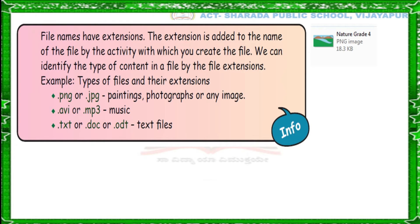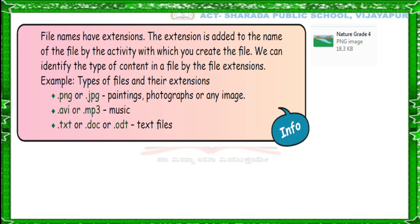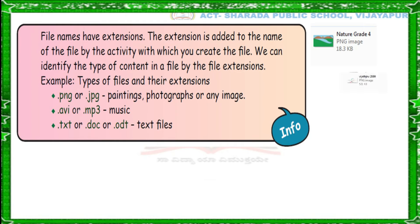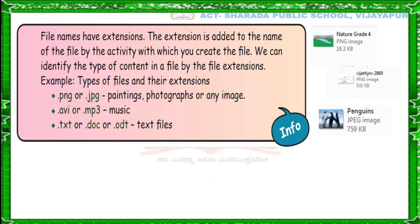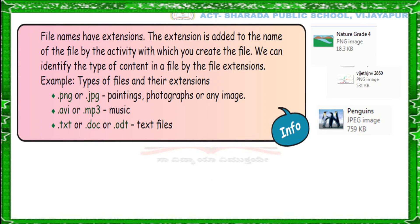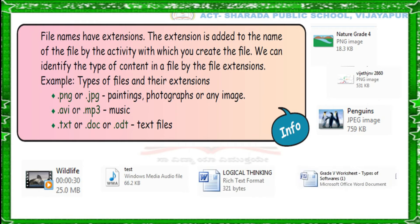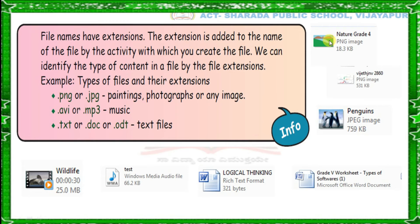Children, .png or .jpg extensions are used for paintings, photographs, or any image. .avi or .mp3 extensions are used for music files. .txt, .doc, or .odt are used for text files. Here you can observe the files with their extensions — without opening, we can see the content of the file with the help of extensions.